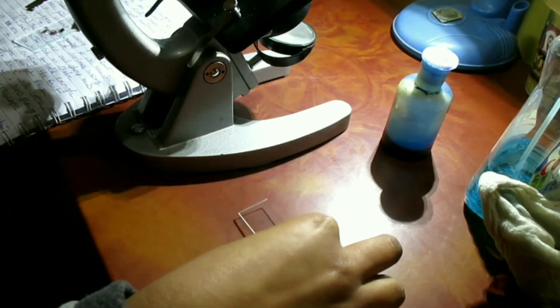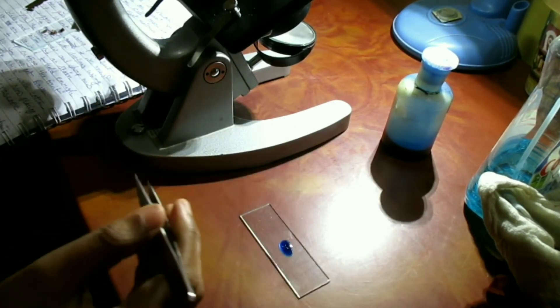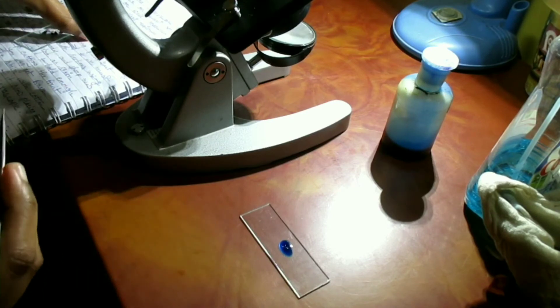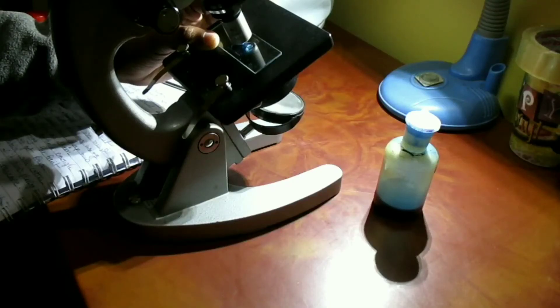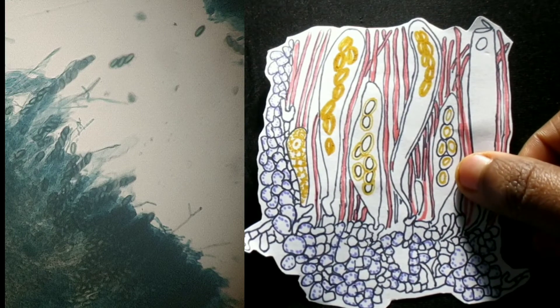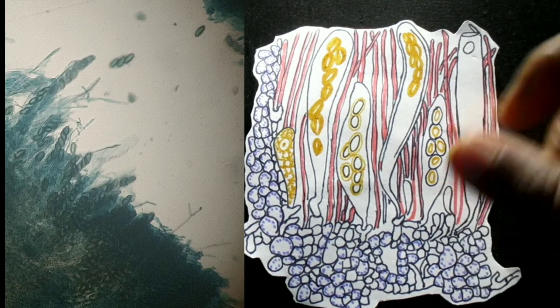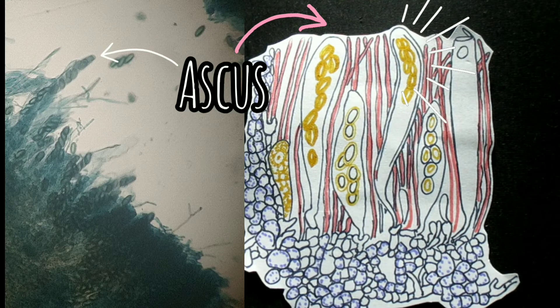We are required to hold enough patience to keep cutting the fruit body until we get a fine, thin section, then staining it with cotton blue. Now, placing the slide under the microscope, first of all we need to learn about ascus and ascospores. The ascus are mostly elongated, either cylindrical or club-shaped, multicellular, either stalked or sessile structures.